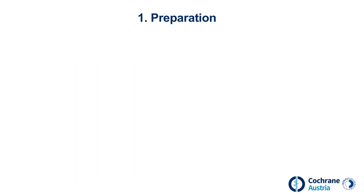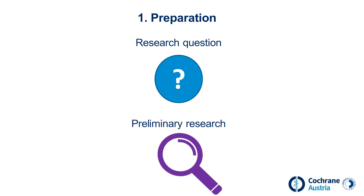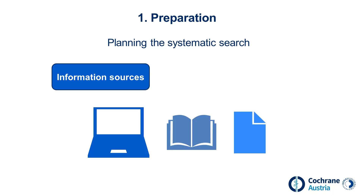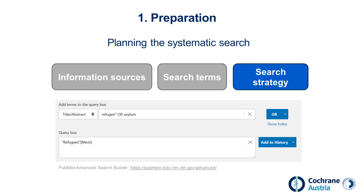The prerequisite for a systematic search is a clearly defined research question. During the preparation of the question, preliminary research is necessary to clarify the extent of the topic and the probable evidence base. Based on the results of these searches, the systematic search is planned. This includes selecting information sources for the search, identifying suitable search items, and developing an initial search strategy.